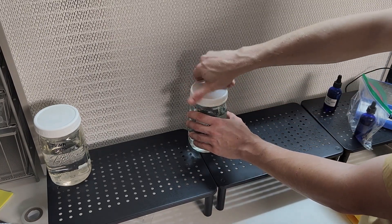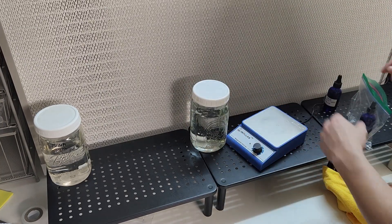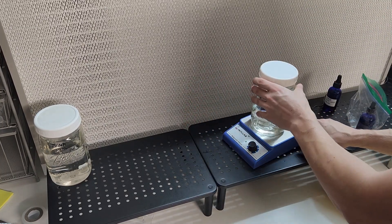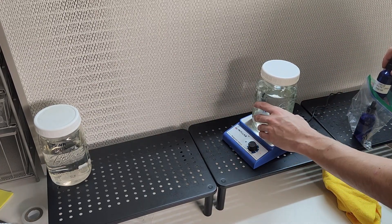To do this simply fill any autoclavable glass jar with distilled water and then add the smallest drop of tween 20 that you can possibly add to it. Add a stir bar and mix it up thoroughly.